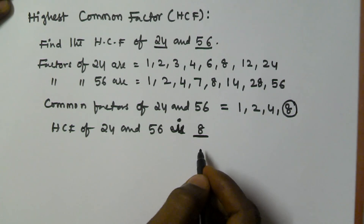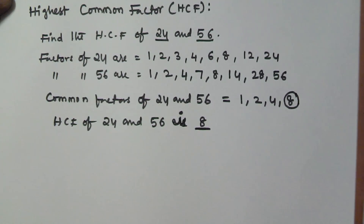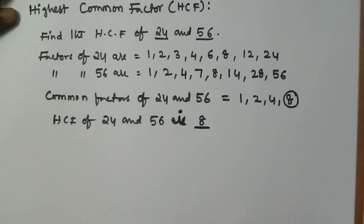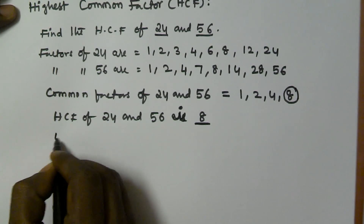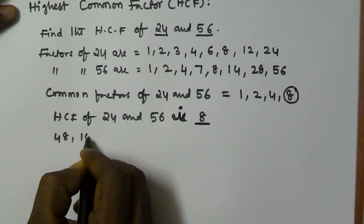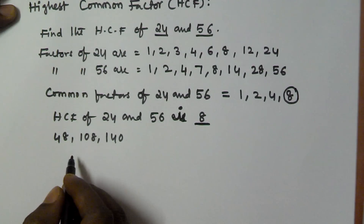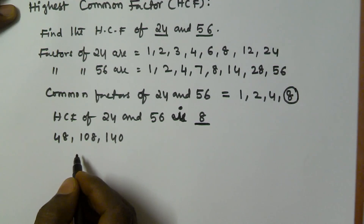There are two methods to find the HCF of given numbers. One is the factors method and the other is the division method. Now let's find the HCF of 48, 108, and 140 using the factors method.